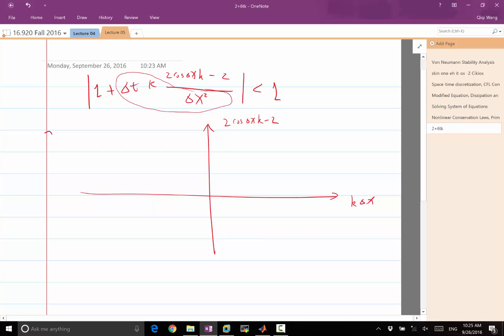Let's define this constant C as kappa delta t over delta x squared. We're going to know later on this number is called the so-called CFL number.